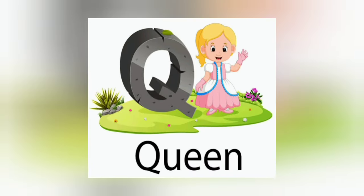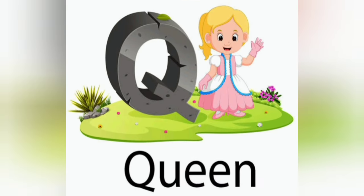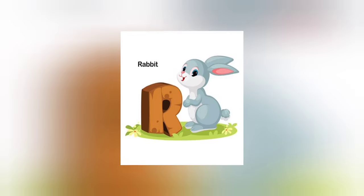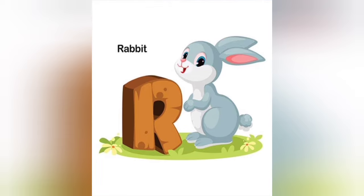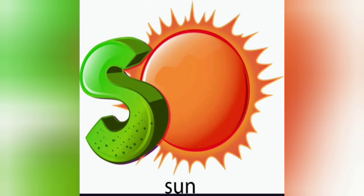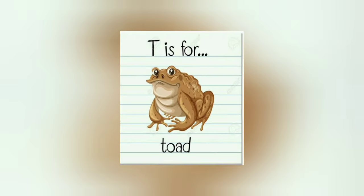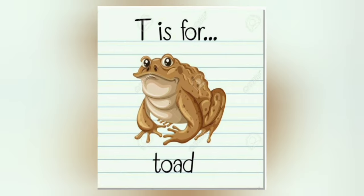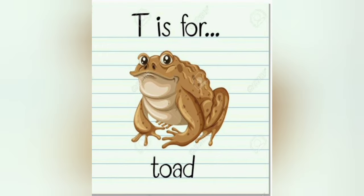Q is for queen, qu-qu-queen. R is for rabbit, r-r-rabbit. S is for sun, s-s-sun. T is for toad, t-t-toad.